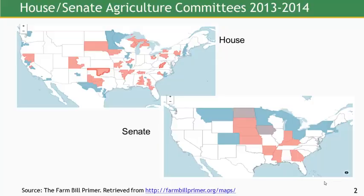To get a handle on the politics of the Farm Bill, it's really valuable to start with the Agriculture Committees. The legislators on these committees traditionally are responsible for drafting the Farm Bill and play a major role in what gets in there and how it looks. You might notice the House is more Republican and the Democrats have a slight majority in the Senate. The committee members are generally from districts with a lot of commodity agriculture, although there are key members from states like Michigan, California, and New York, where there is specialty crop agriculture and more interest in anti-hunger programs.